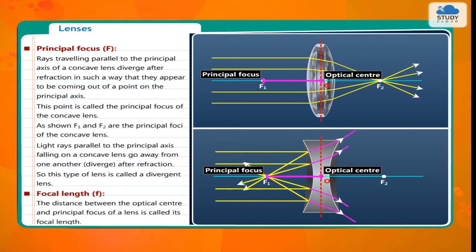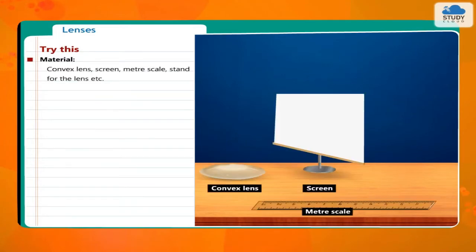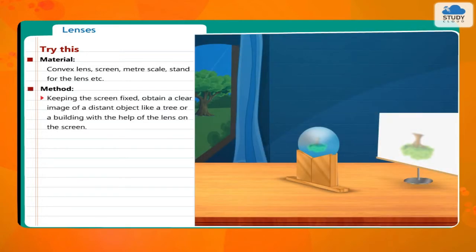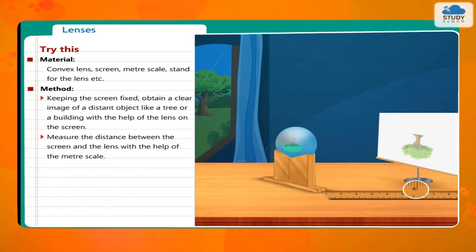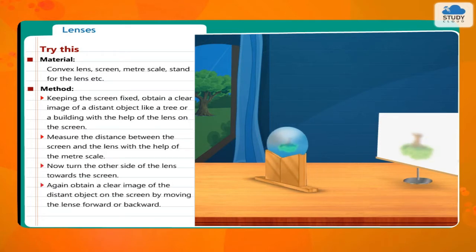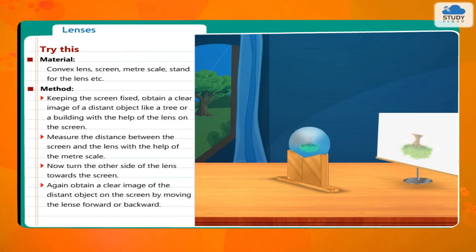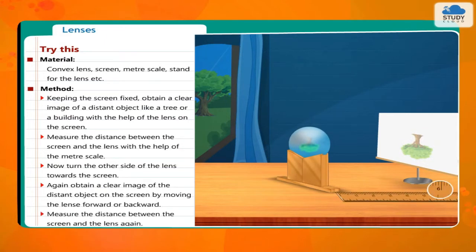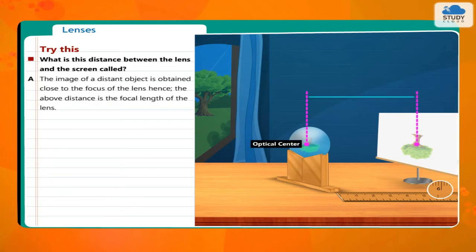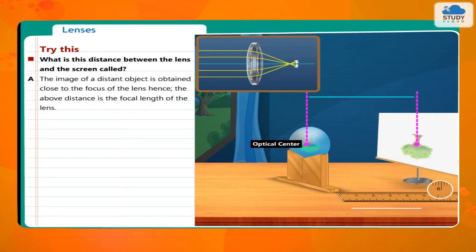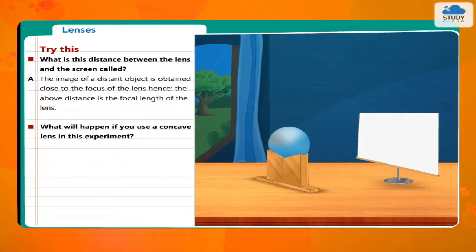The distance between the optical center and the principal focus of a lens is called its focal length F. To find the focal length, keep the screen fixed and obtain a clear image of a distant object like a tree or a building using the lens on the screen. Measure the distance between the screen and the lens. Now turn the other side of the lens towards the screen, obtain a clear image again, and measure the distance once more. The image of a distant object is obtained close to the focus of the lens, so this distance is the focal length of the lens.